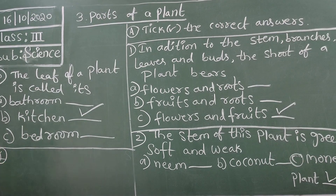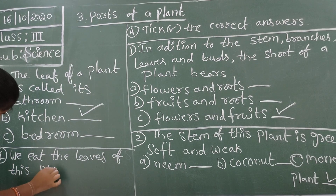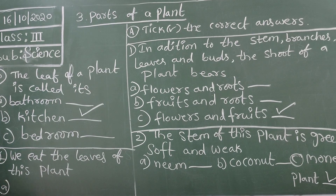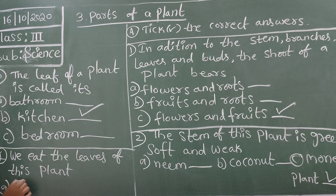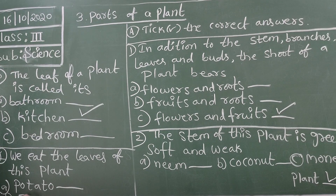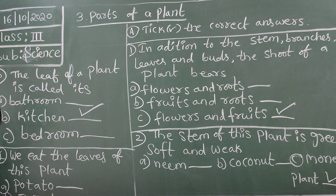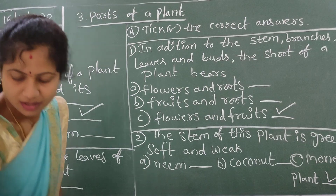We eat the leaves of this plant. Which plant's leaves do we eat? Options - A: potato, B: tomato, C: spinach. Potato is not a leafy vegetable. Tomato is also a vegetable, but spinach is the leafy vegetable. So spinach is the correct answer.